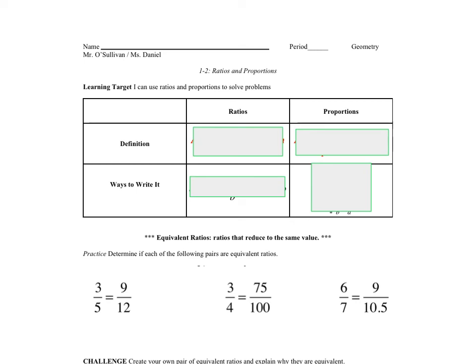So today's learning again, as I said before, is I can use ratios and proportions to solve problems, but here's the issue. What's the definition of a ratio or a proportion and how can we write it?